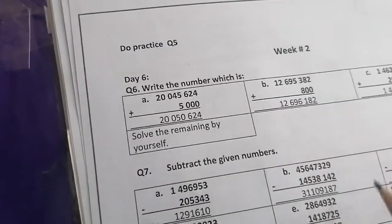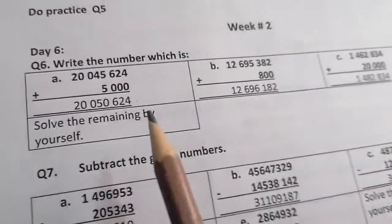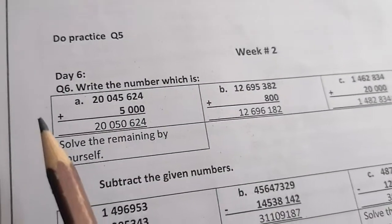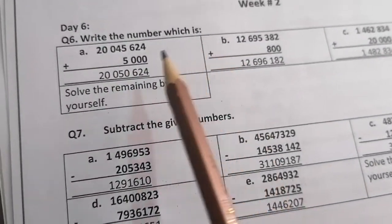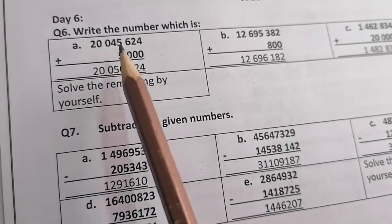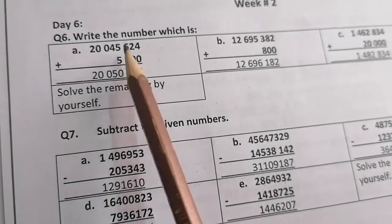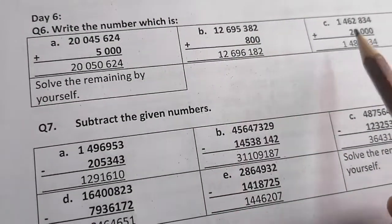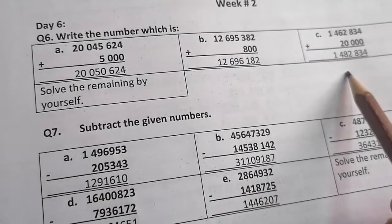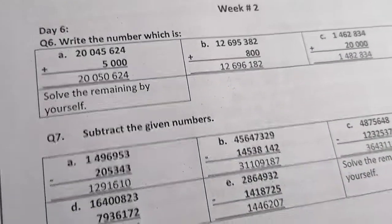Now, question number 5 is the same as question number 4. Now, question number 6. Write the numbers which is we have to add 5,000 in this value, 800 in this value and 20,000 in this value. Add these numbers.